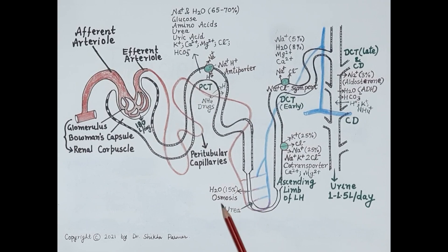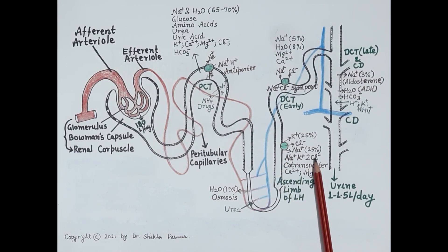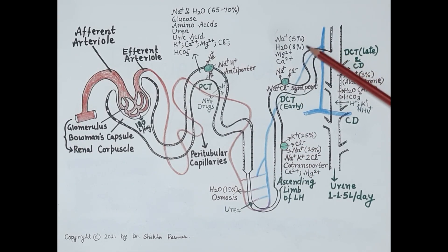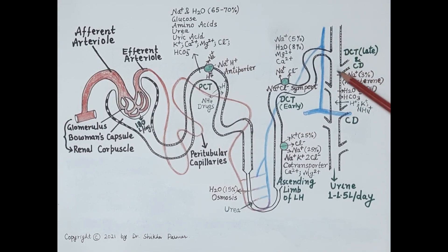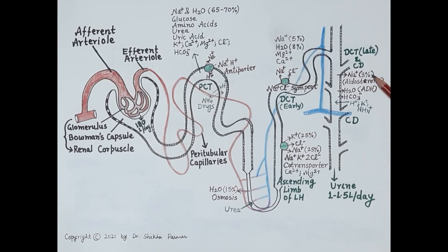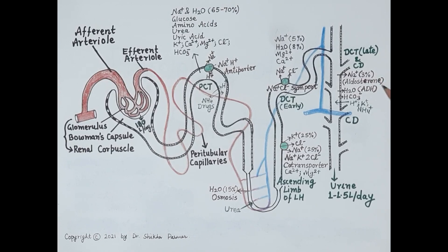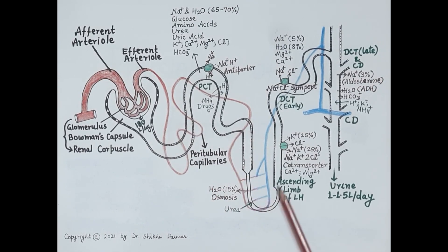In the descending loop of Henle, 15 percent of water is reabsorbed. In the ascending limb of the loop of Henle, around 25 percent of sodium is reabsorbed. In the early distal tubule, around 5 percent of sodium and 8 percent of the water content is reabsorbed. In the late distal convoluted tubule and collecting duct, around 3 percent of sodium is absorbed along with additional water.